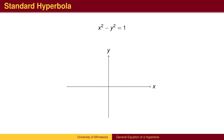To see what the graph looks like, we first examine the intercepts. If x equals 0, then we are left with the equation negative y squared equals 1, which has no solutions. So this graph will not touch the y-axis. If y equals 0, we get the equation x squared equals 1, so we will have intercepts at negative 1 and 1.